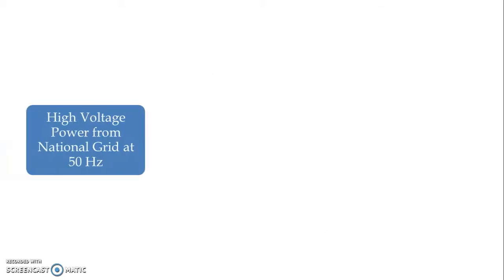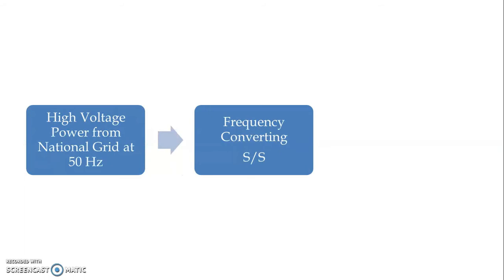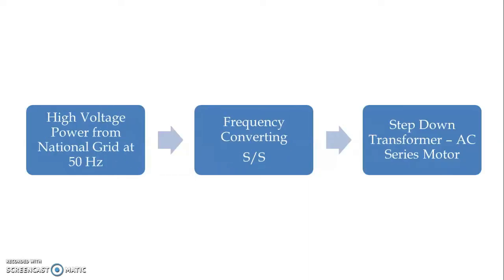Let us see the block diagram for the general arrangement of the AC system with low frequency high voltage. Power at 50 Hz is obtained from the national grid, then a frequency converting substation reduces the frequency from 50 Hz to 25 Hz or 16.66 Hz for the overhead distribution cable. At the locomotive, a step-down transformer matches the voltage for the AC series motor.